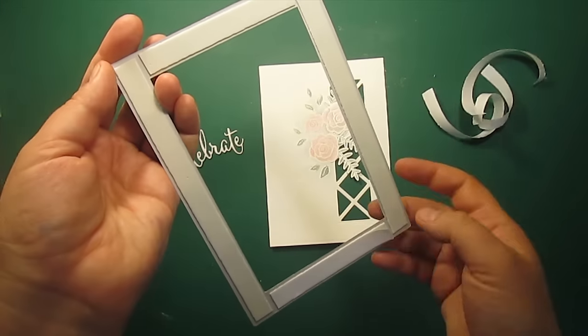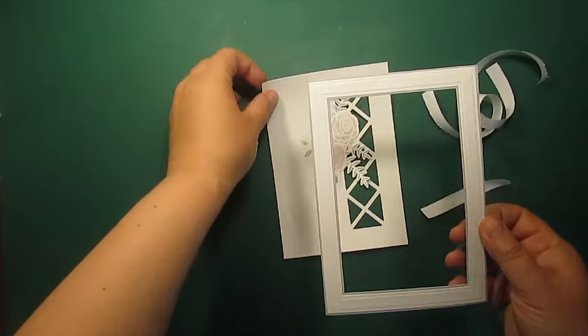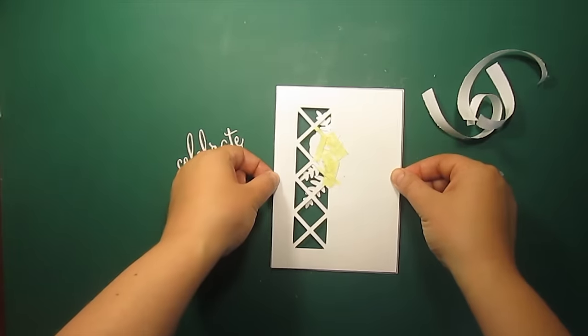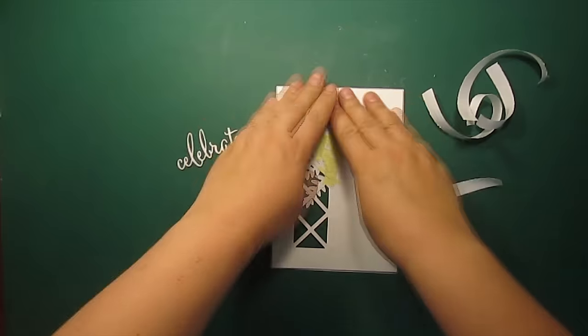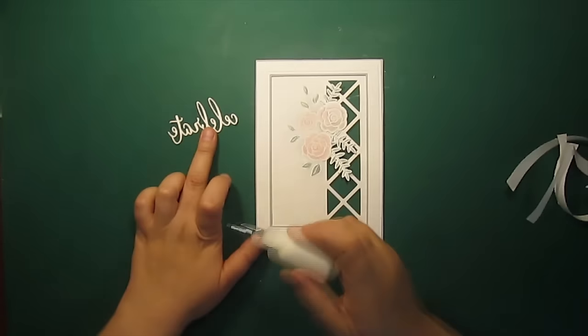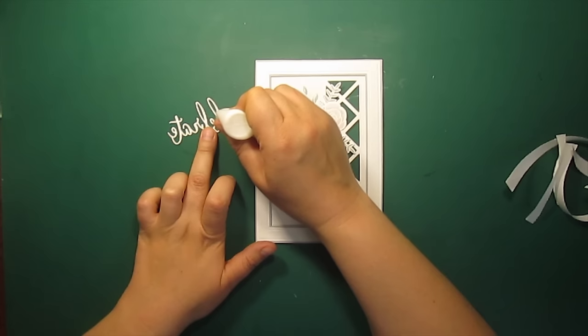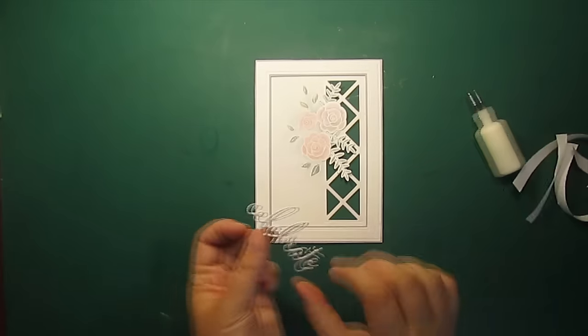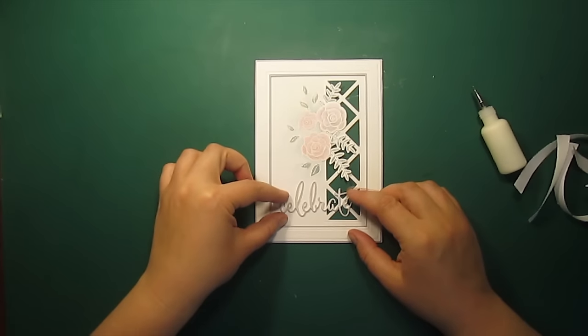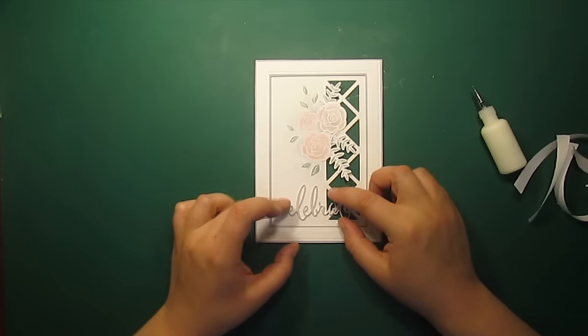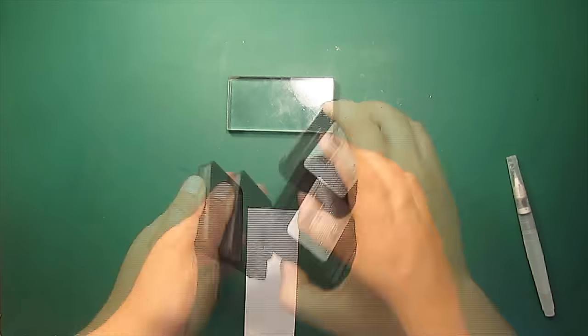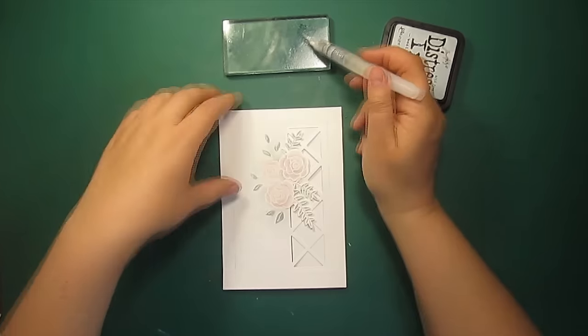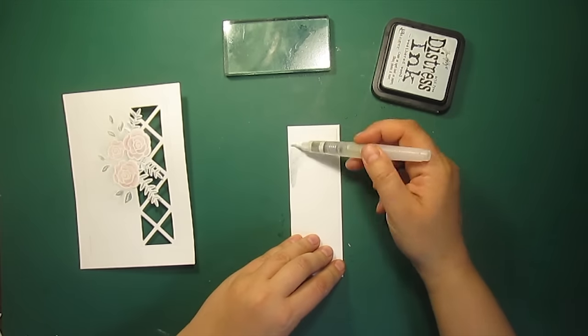I'm using some foam tape to mount a frame on a panel. Then I'm attaching the sentiment with the liquid glue. I'm also going to add some background color to the strip of watercolor paper to go behind the letters.